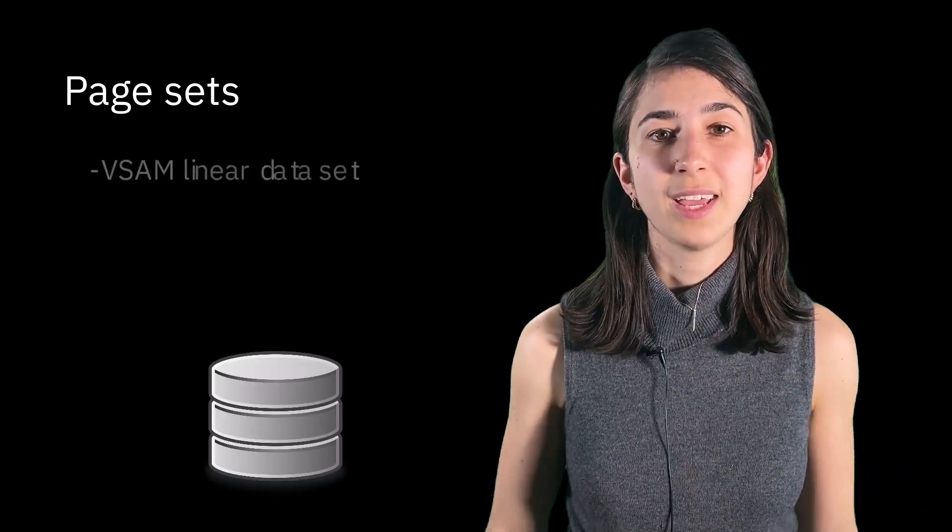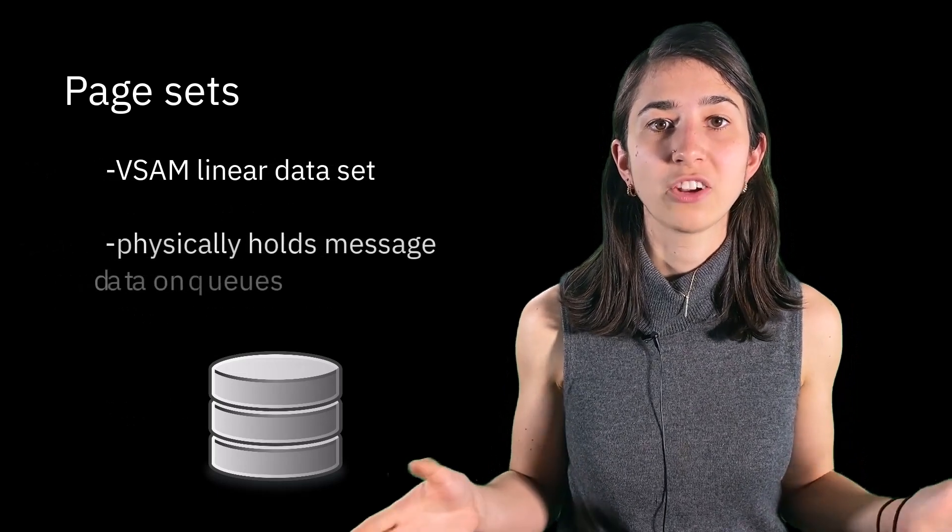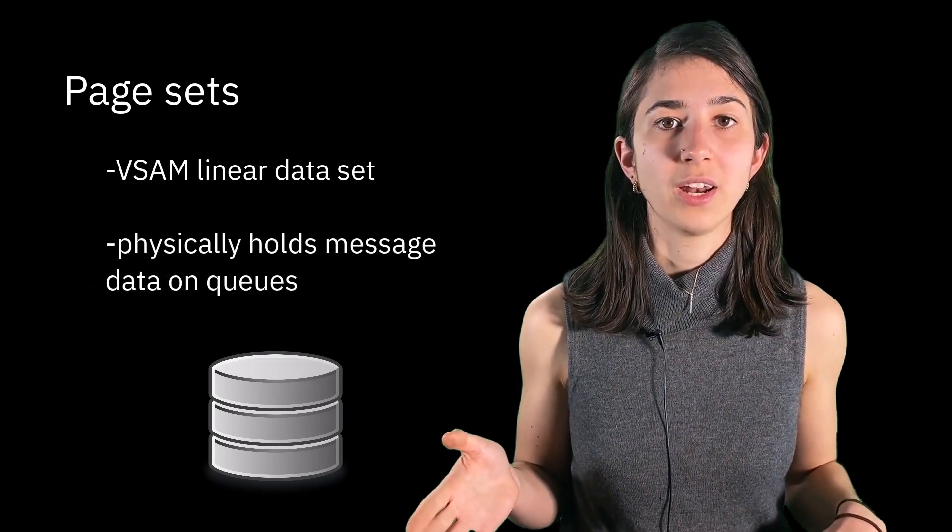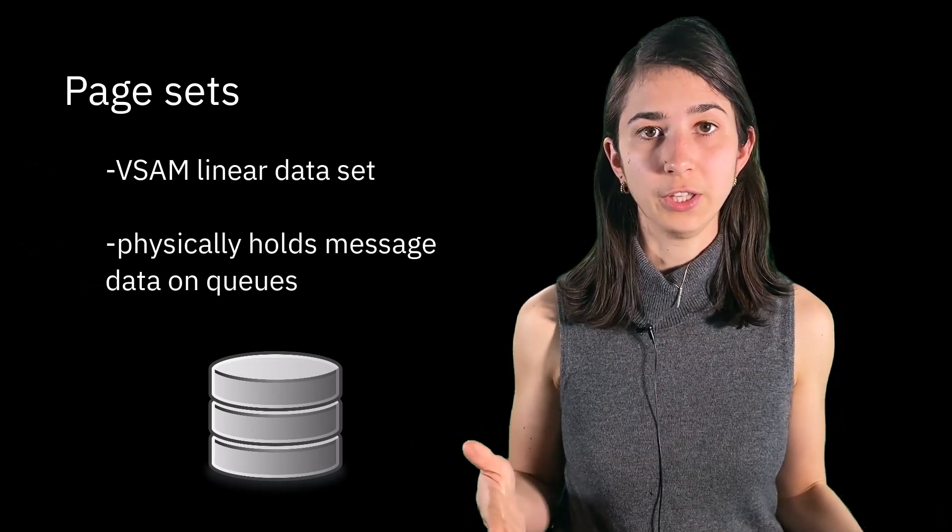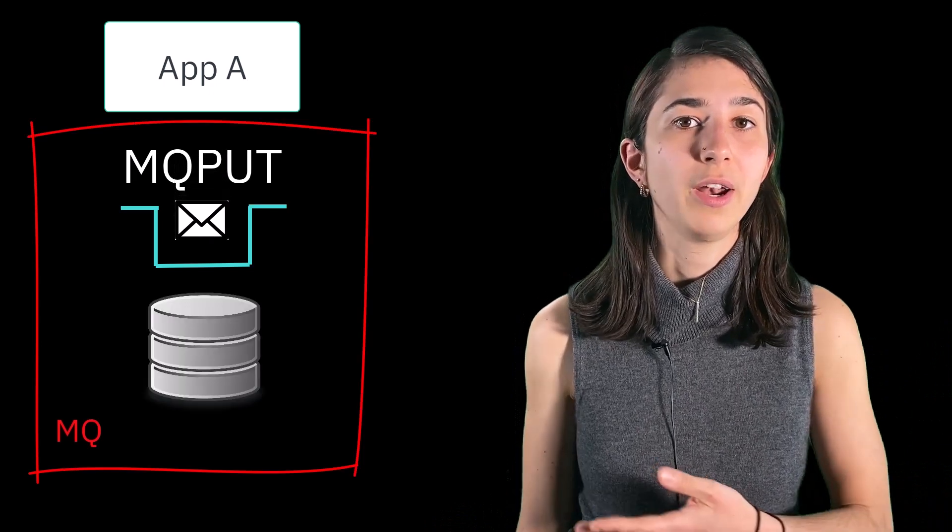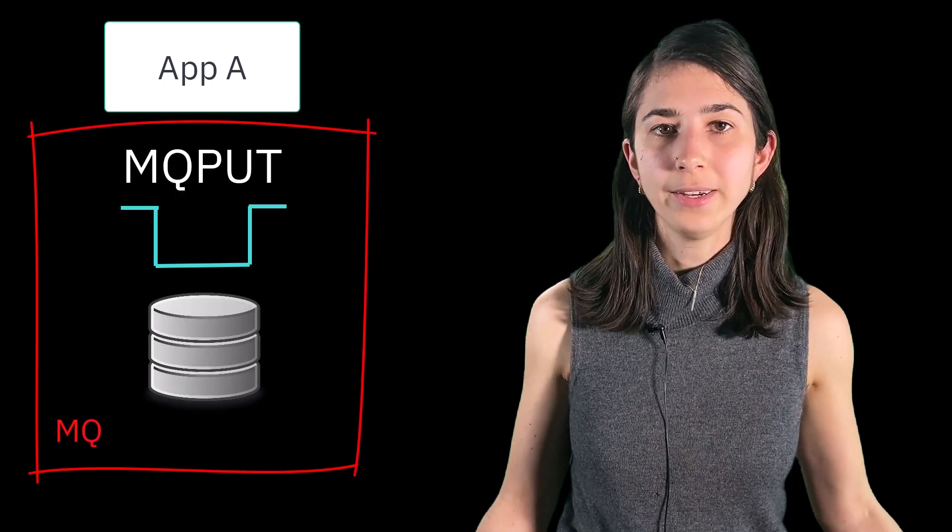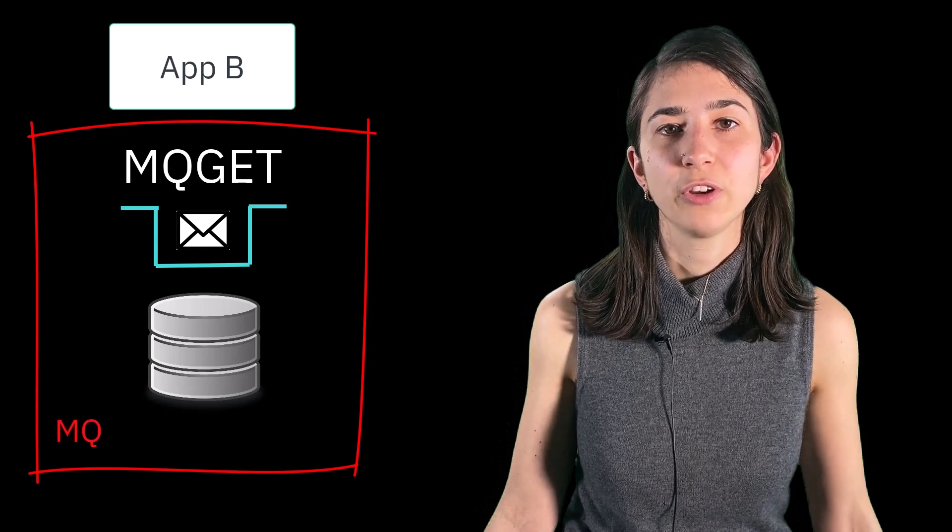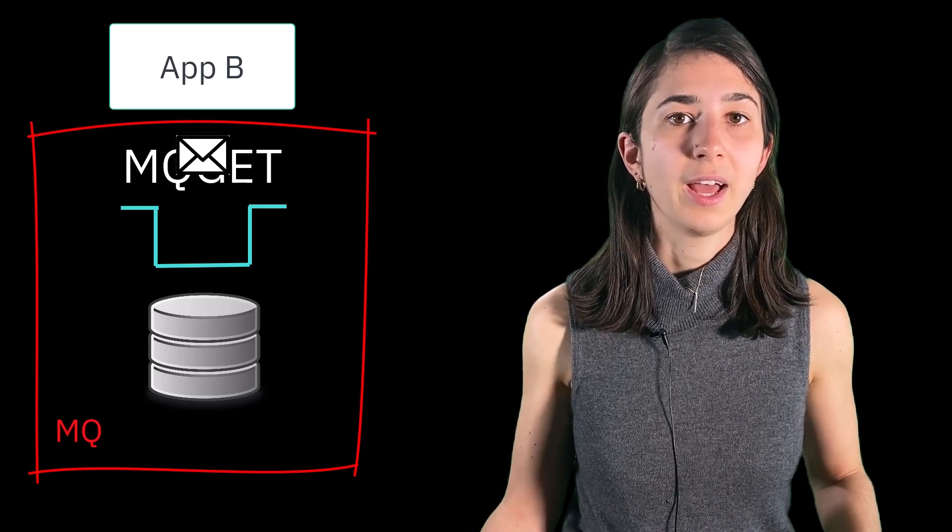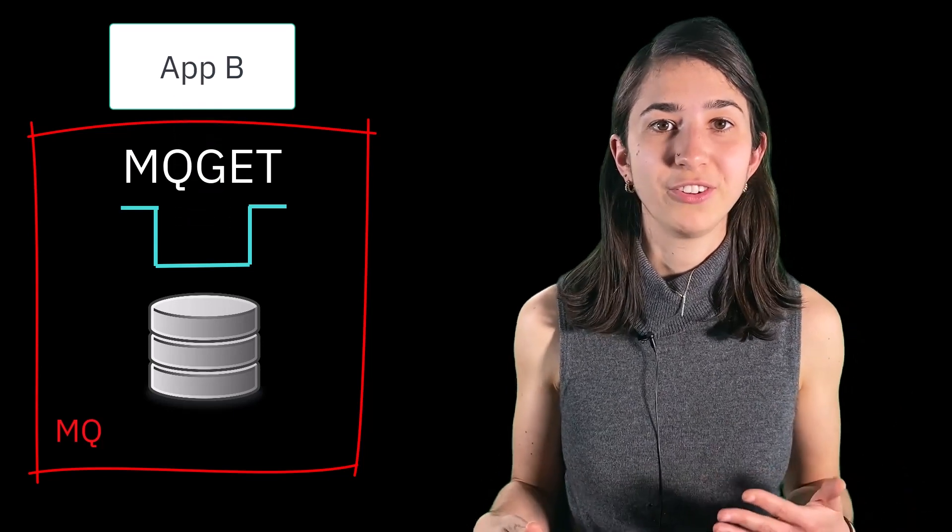Page sets are VSAM linear data sets that will actually hold the message data while it's in MQ and while it's on a queue. Your messages, when they're initially put onto a queue, are put on a page set. When they're gotten, the page set is freed up for reuse by further puts of messages later on.